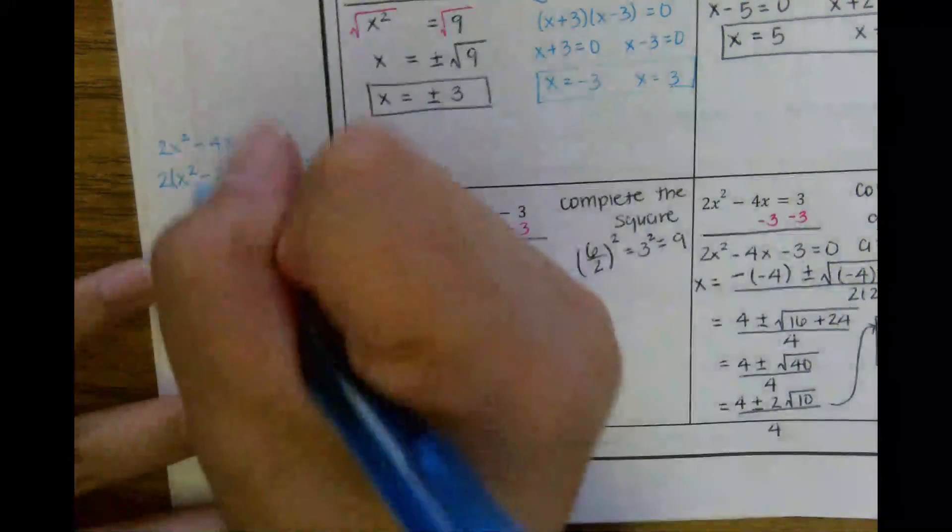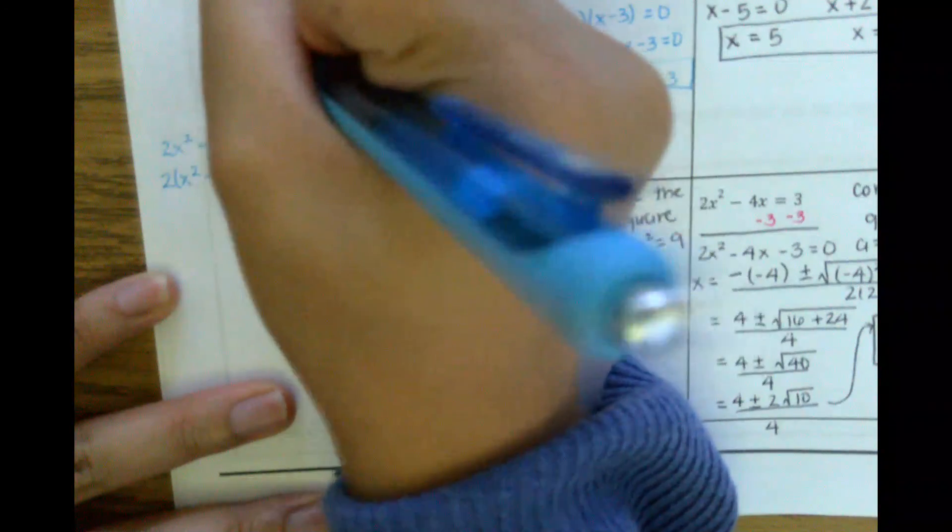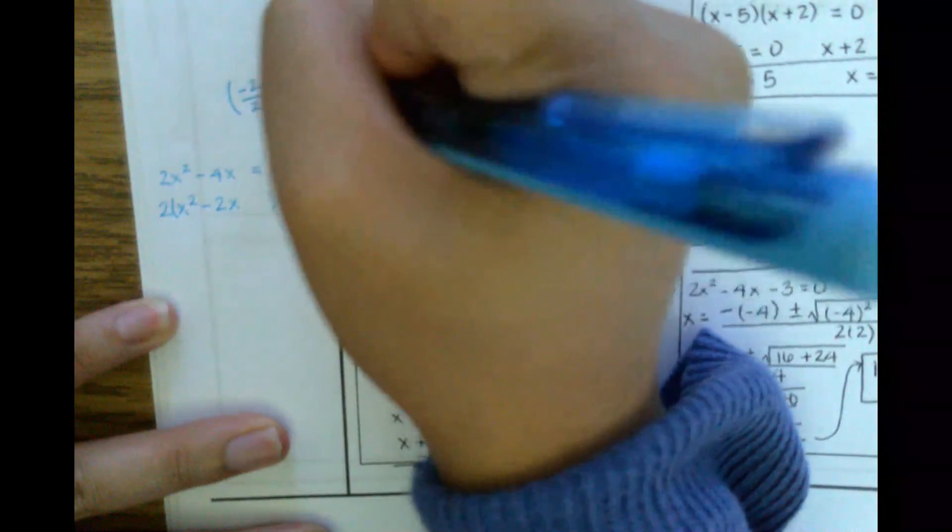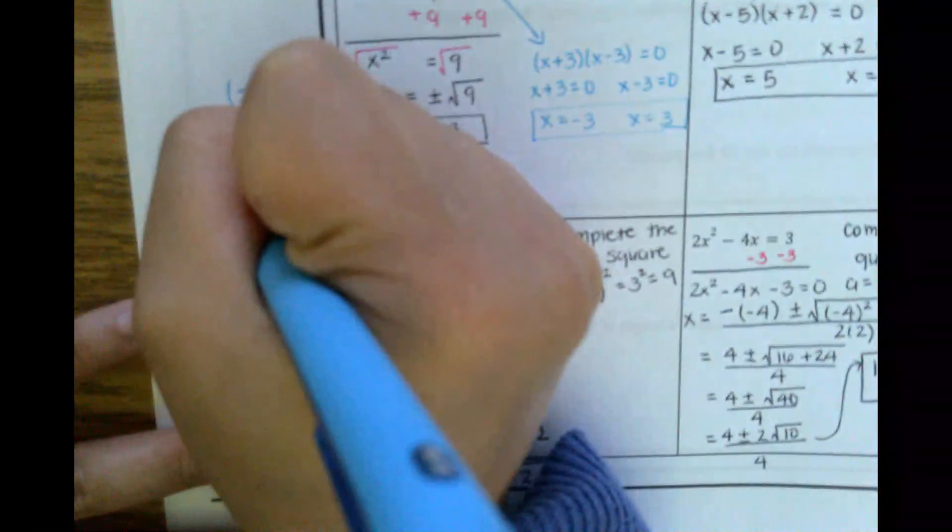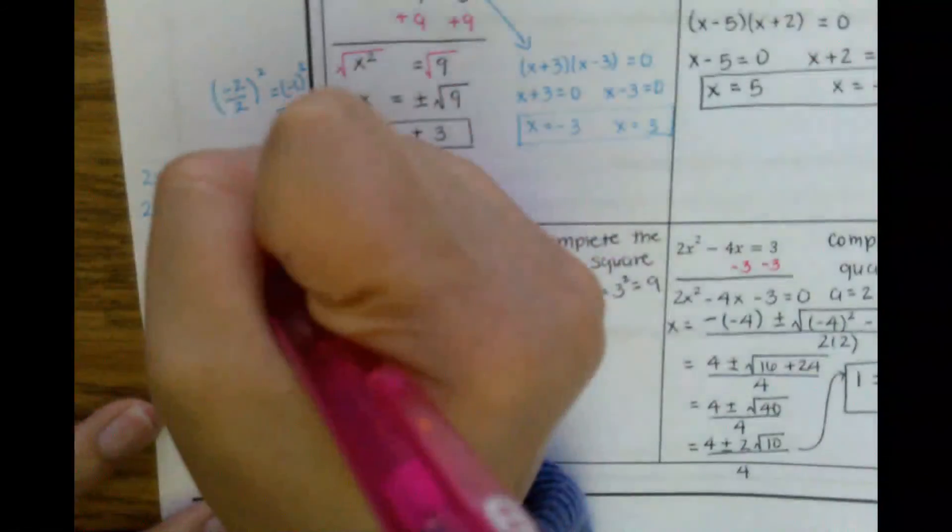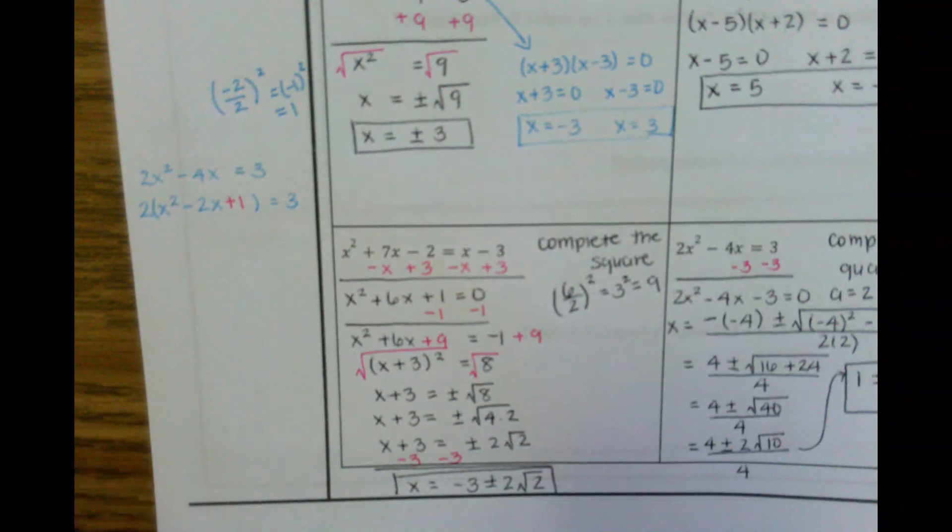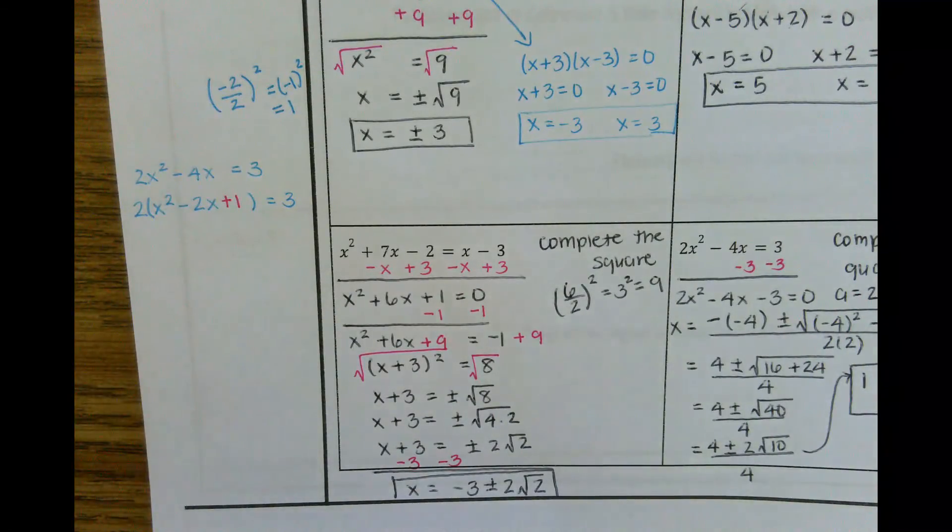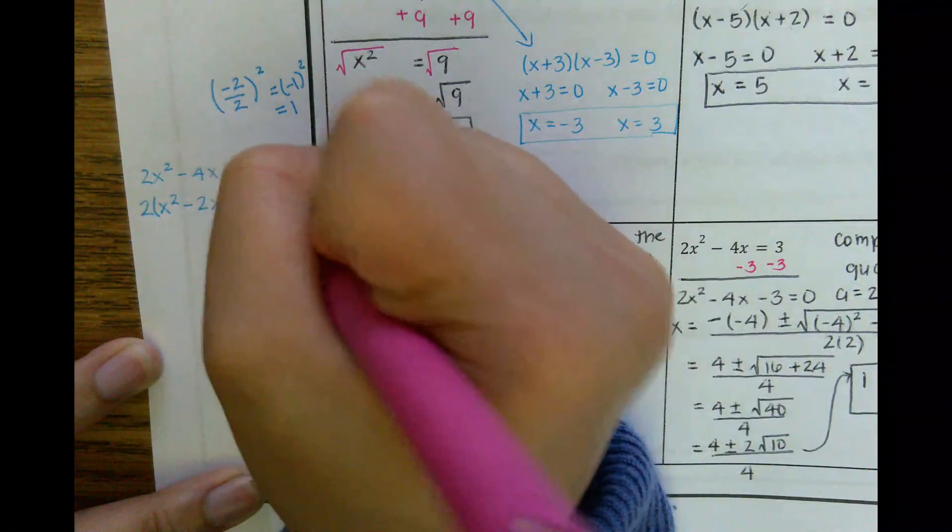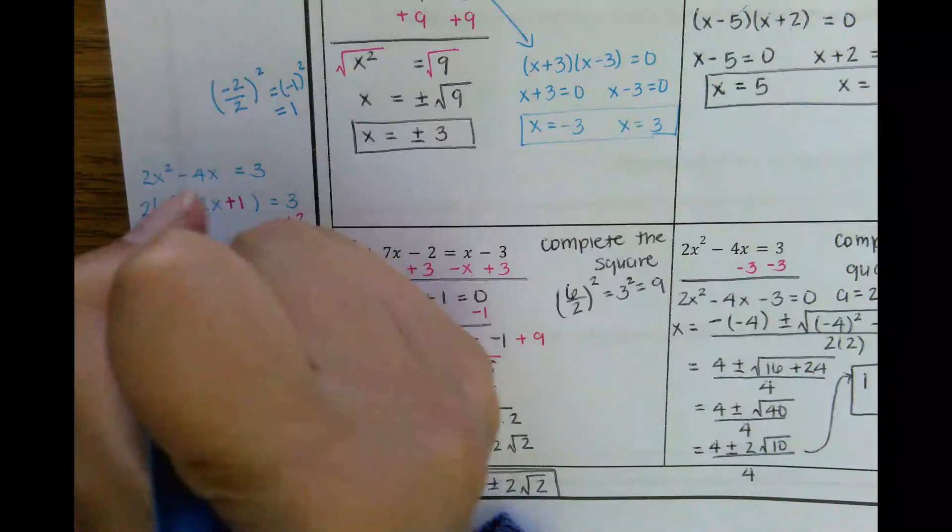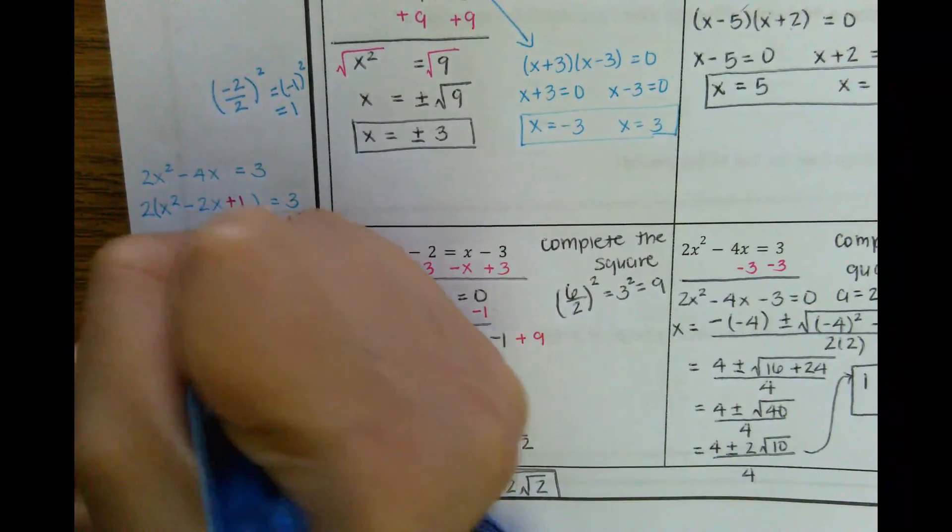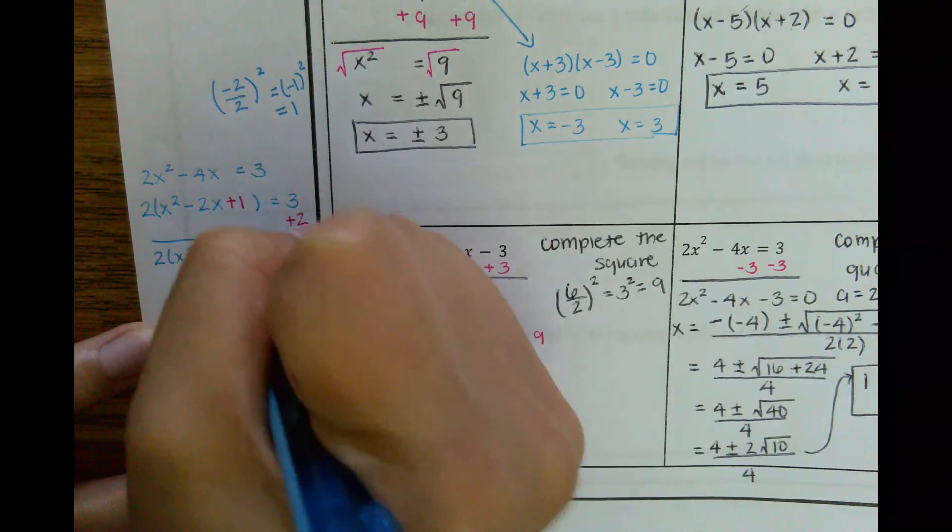Then I'm going to identify B, which in this case is negative 2, divided by 2, and square it. Negative 2 divided by 2 is negative 1, and negative 1 squared is 1. I'm going to take that 1. I'm going to add it in here, and what I've really added is a 2, since this is 2x squared minus 2x plus 2, so on the other side, I'm going to add a 2. So this becomes 2x squared minus 2x plus 1 equals 5.